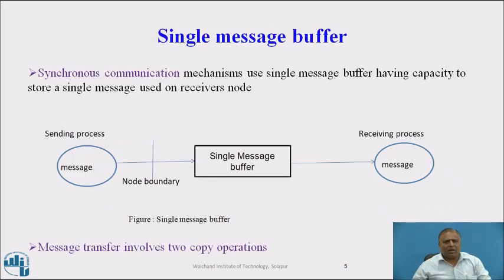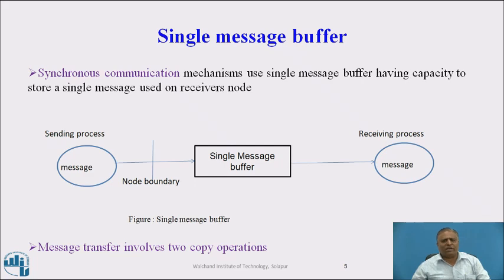Single Message Buffer. In synchronous communication, we use a single message buffer having the capacity to store a single message, used to receive at the receiver's node. The sending address space sends a message which is copied into the single message buffer — it has capacity for only one message. Then the message is copied from the single message buffer to the receiving process address space. So message transfer involves two copy operations.